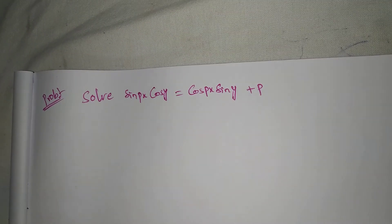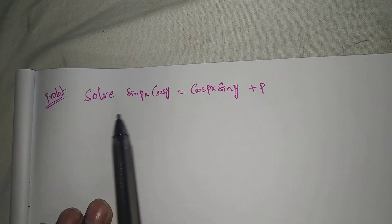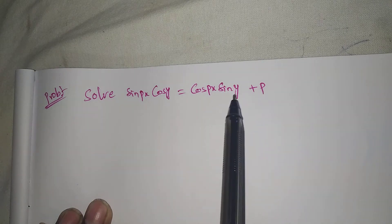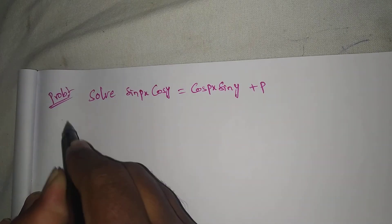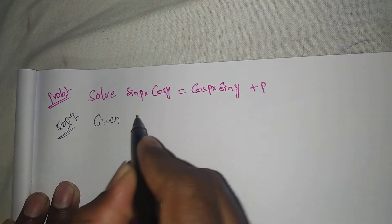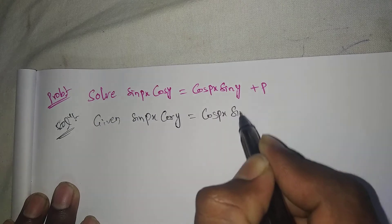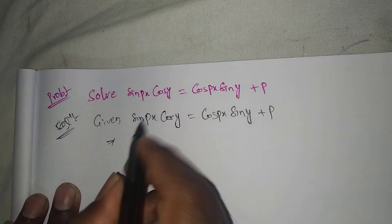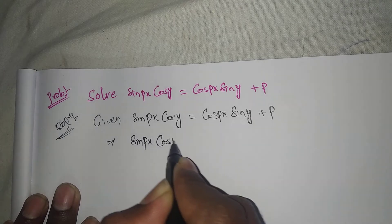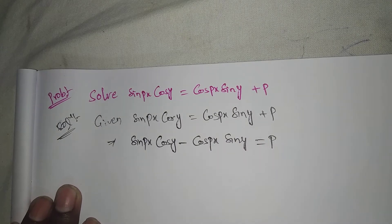Welcome to Rajesh Nikkaru. Today our topic is Clairaut's Equations Problem in Differential Equations. The problem is: solve sin(px)cos(y) = cos(px)sin(y) + p. The solution begins: sin(px)cos(y) = cos(px)sin(y) + p, which implies sin(px)cos(y) minus cos(px)sin(y) = p.